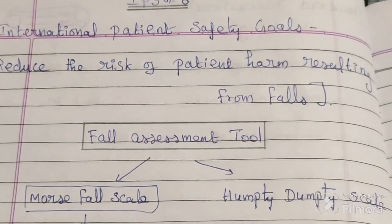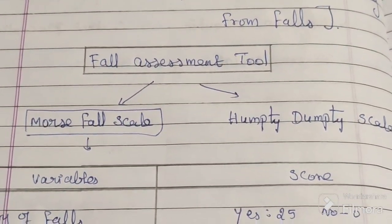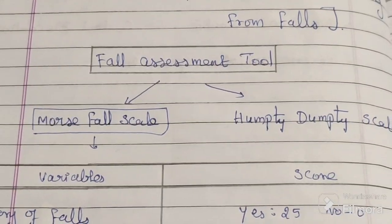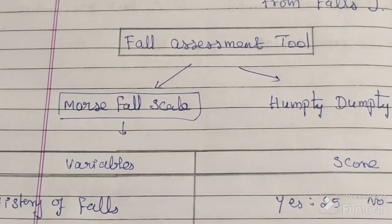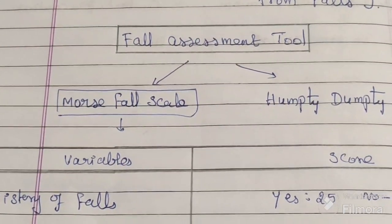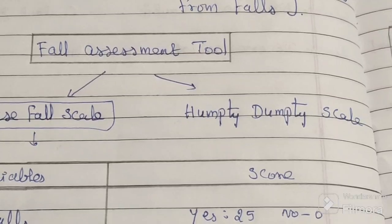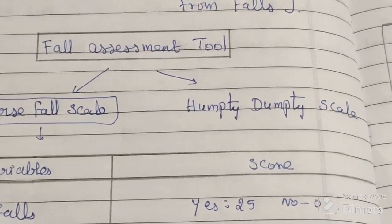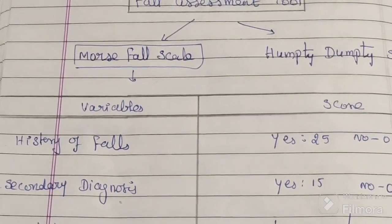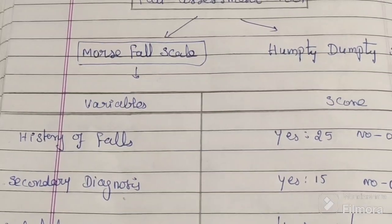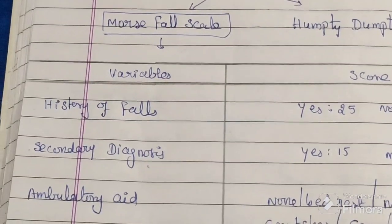There are two most commonly used tools to assess the fall risk. The first one is the Morse Fall Scale, which is used to assess fall risk in adults, and the second one is the Humpty Dumpty Scale, which is used to assess fall risk in pediatrics. The Morse Fall Scale consists of six variables.